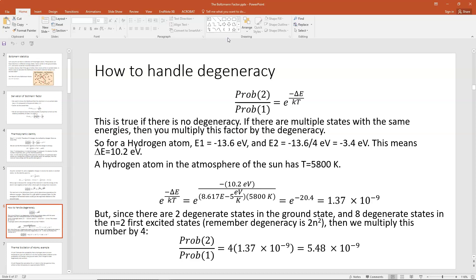Okay, hydrogen atom. Our ground state is -13.6 eV. Our first excited state is -13.6 eV divided by 2 squared, which is 4. So that gives us E_2 = -3.4 eV. So the change in energy delta E between those two states would be 10.2 eV. In other words, the first excited state, n=2, is 10.2 eV higher in energy than the ground state, which is -13.6 eV.